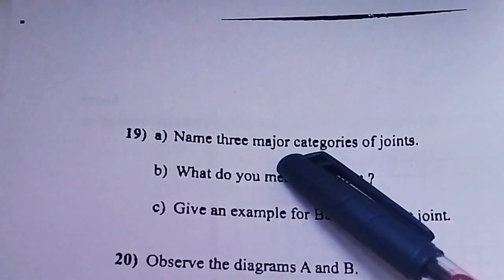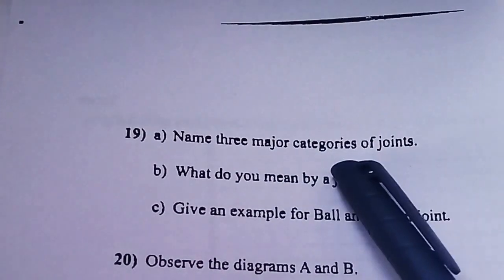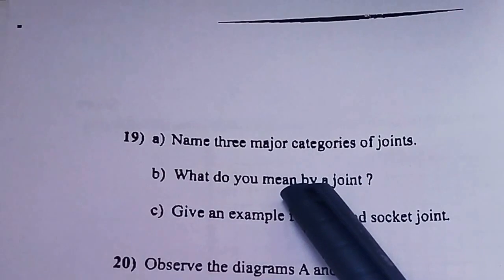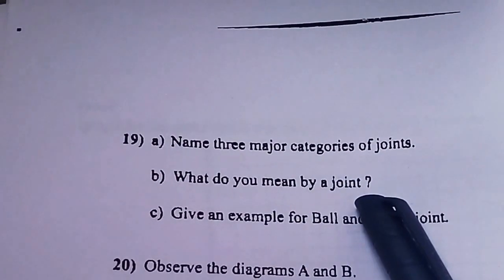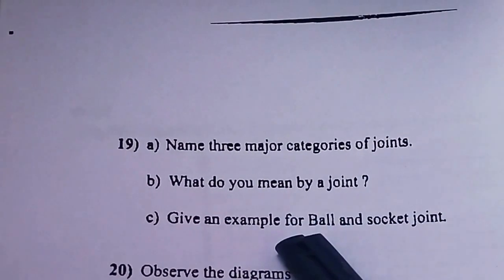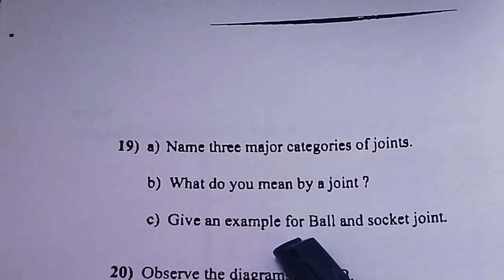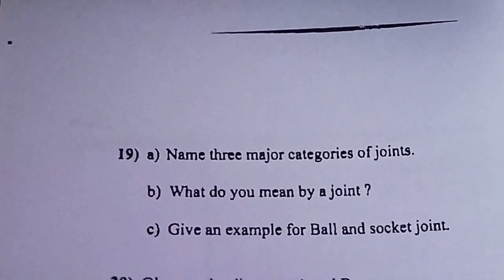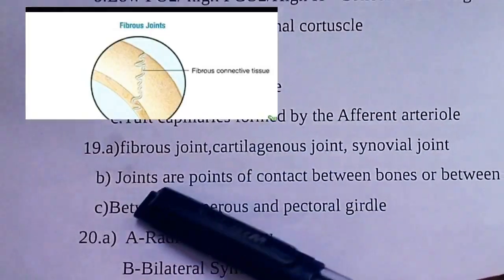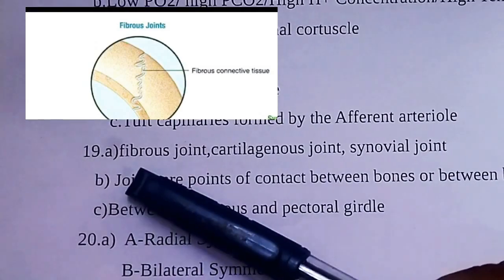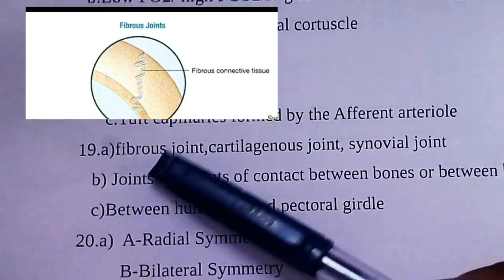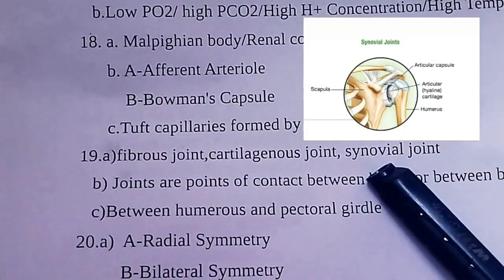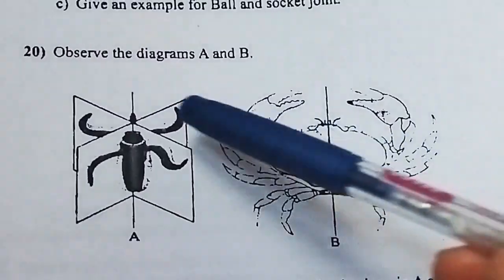Name the three major categories of joints. What do you mean by a joint? Give an example for a ball and socket joint. The three categories are: Fibrous joint, Cartilaginous joint, and Synovial joint.